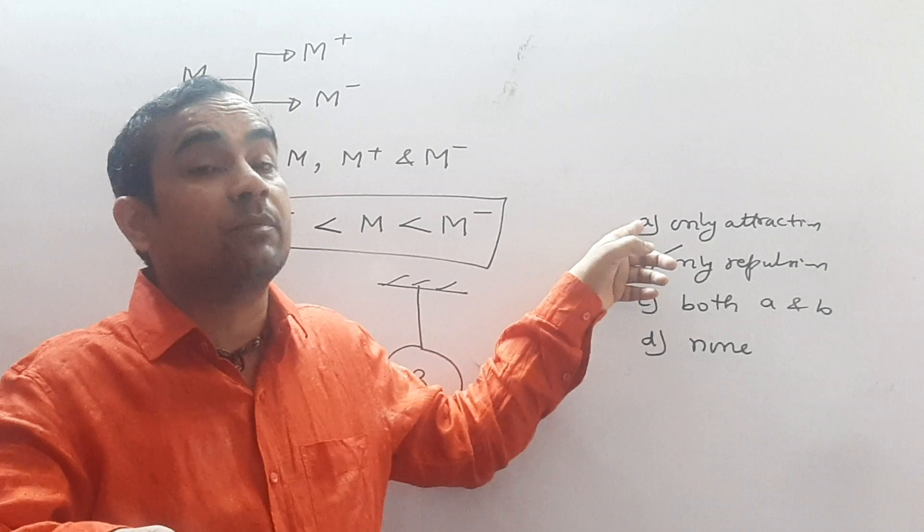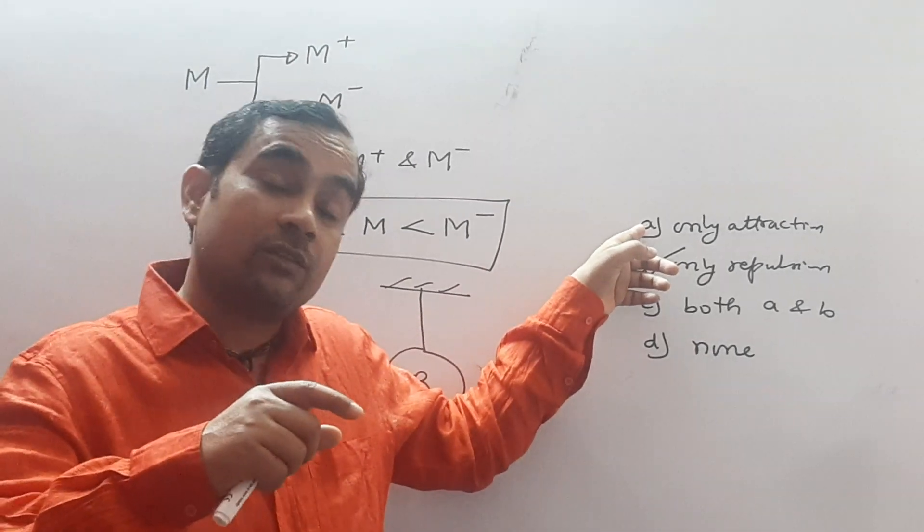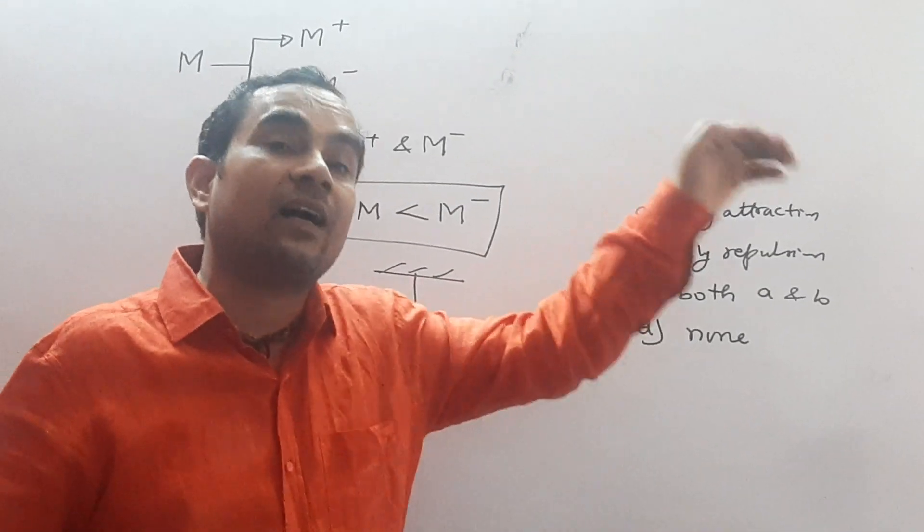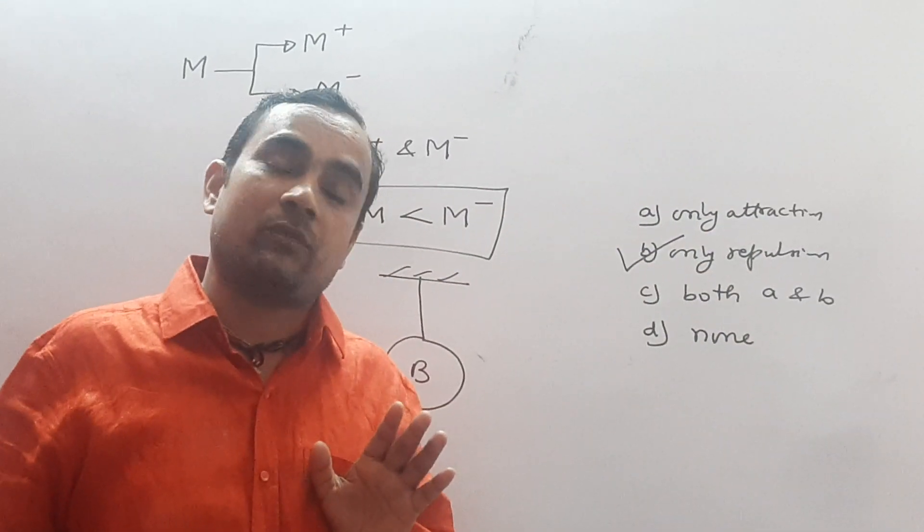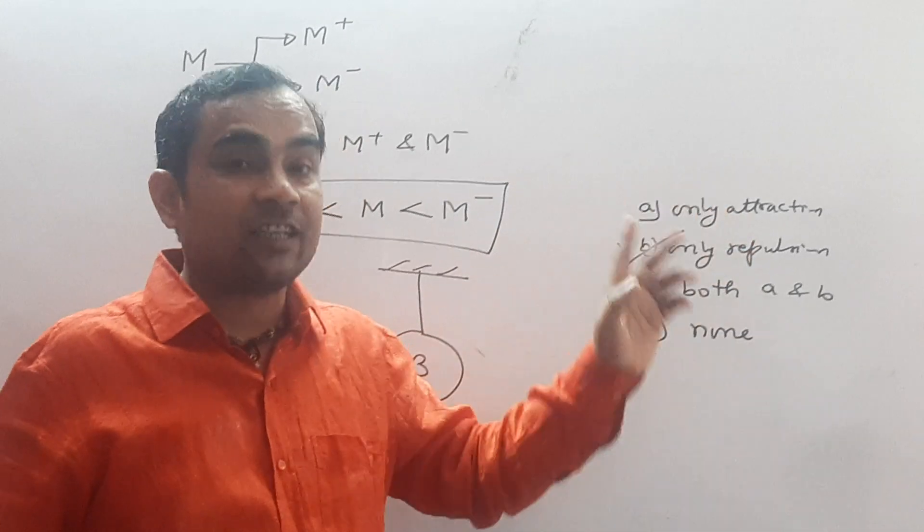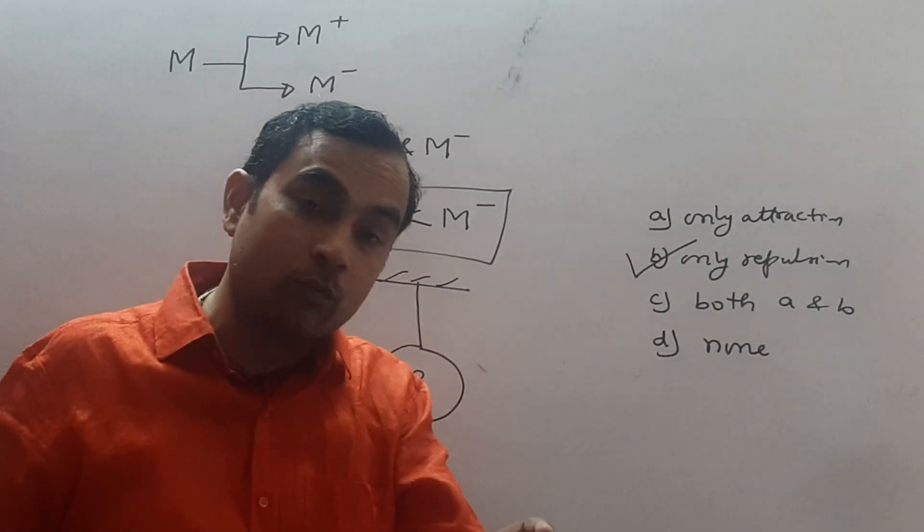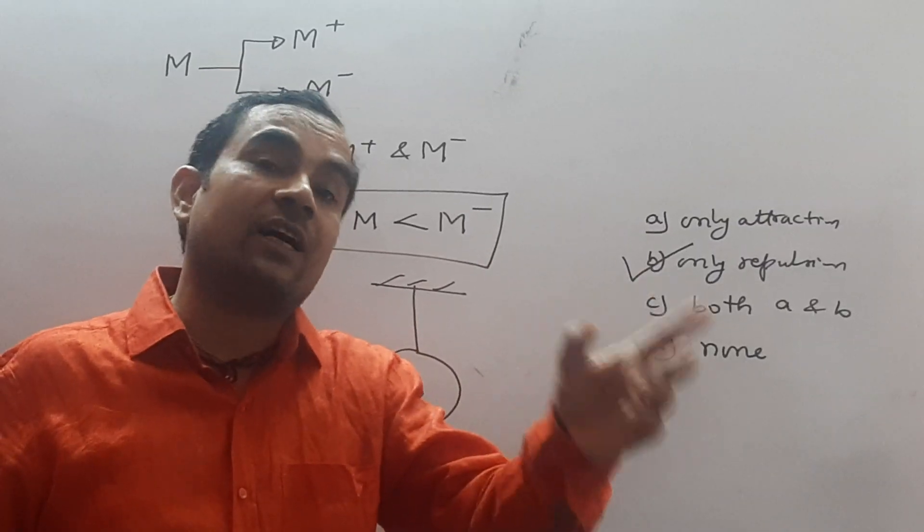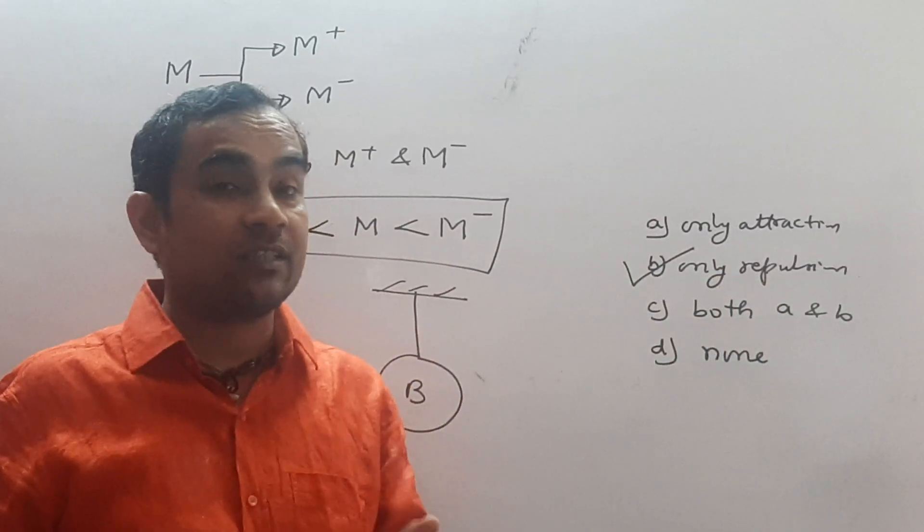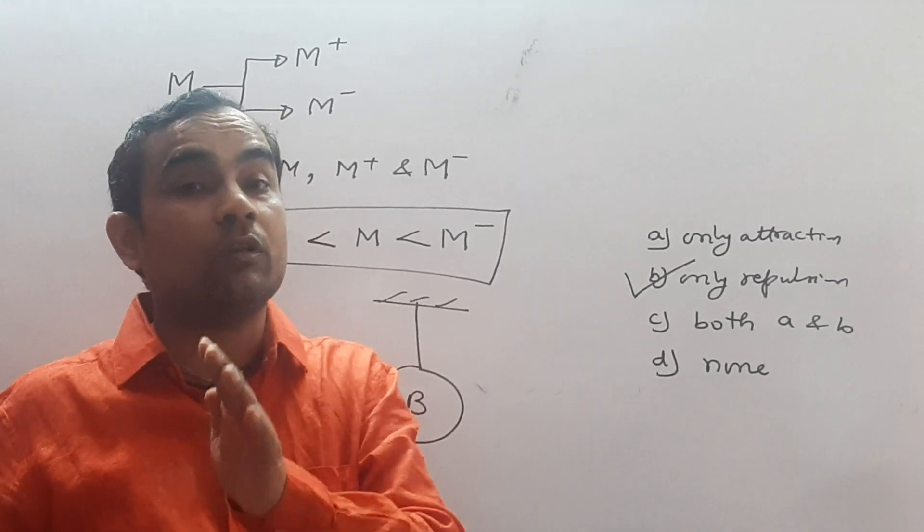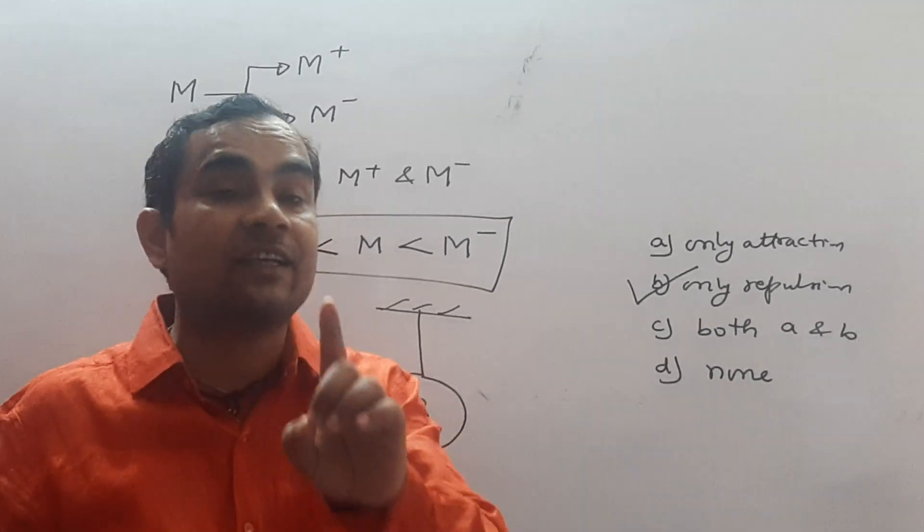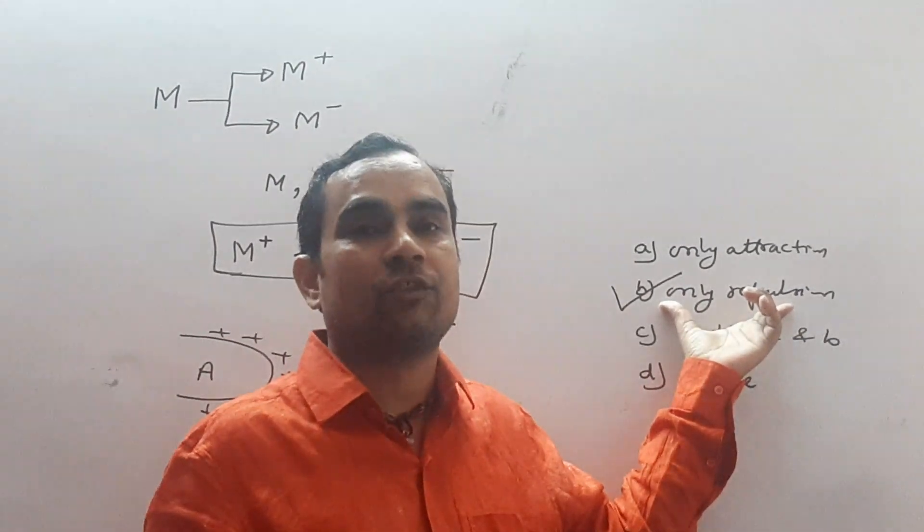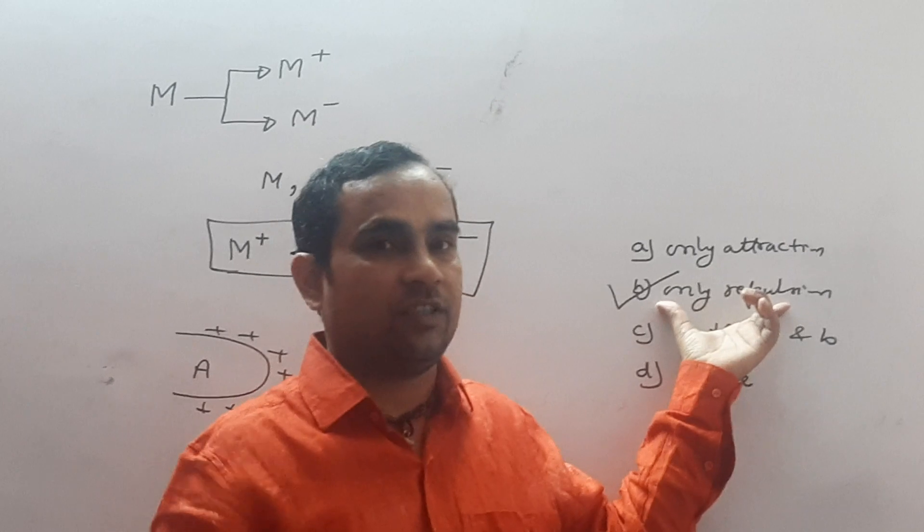But attraction may take place between two charged objects and a charged object and uncharged object also. So attraction may take place if both the objects are likely charged. So repulsion is the confirmed test of electrification.